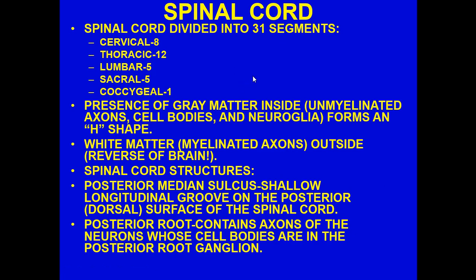The spinal cord is divided into 31 segments. In a transverse cut, you find gray matter and white matter. Gray matter — unmyelinated axons, cell bodies, and neuroglia — forms an H-shape on the inside. White matter — heavily myelinated axons — is on the outside. This is the reverse of the brain, where gray matter is on the outside and white matter is inside. In the spinal cord, gray matter is on the inside and white matter is on the outside.